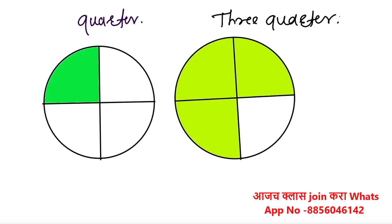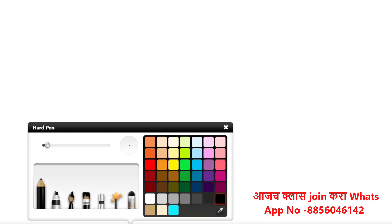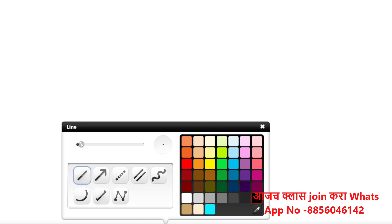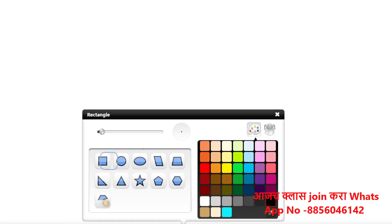Quarter means one part of any object or any number. Same like if thousand or hundred — look at here a chart. It's a very important chart; you also make it on a paper and attach it in your study room.